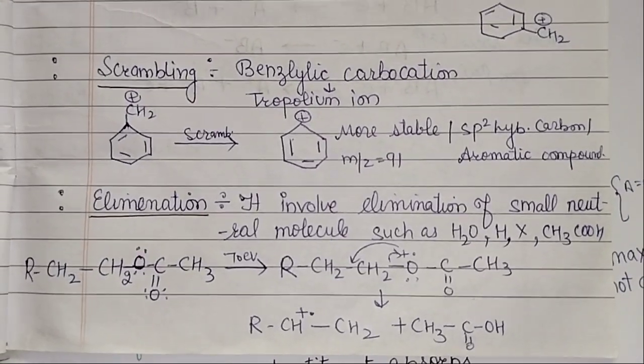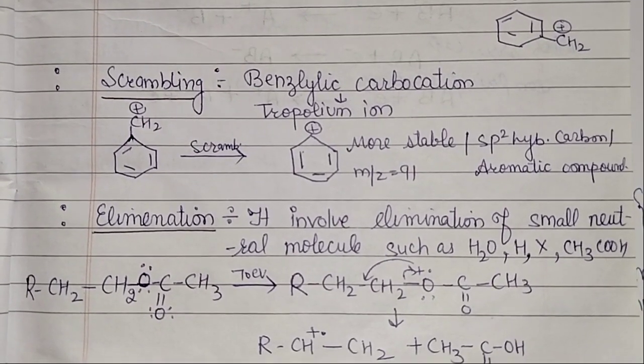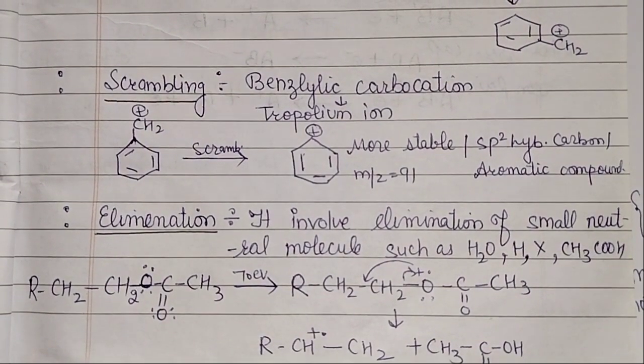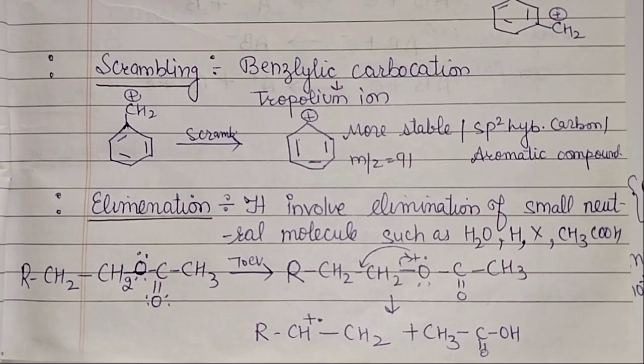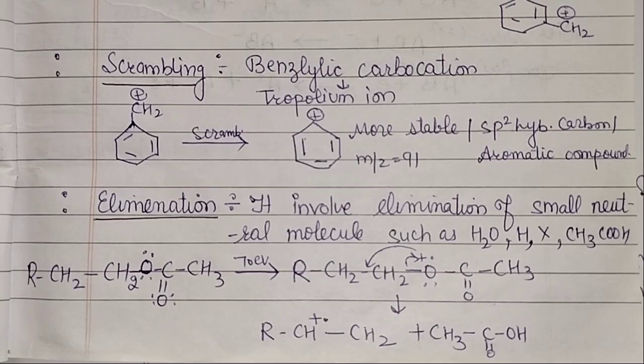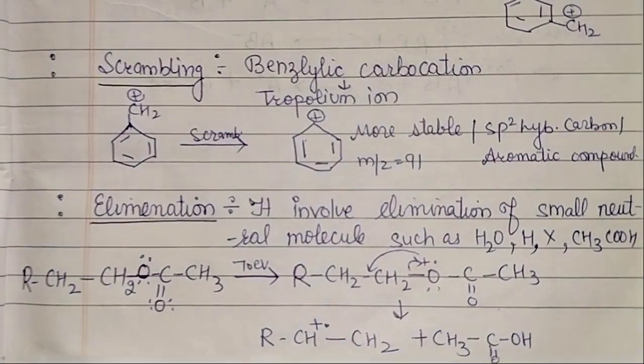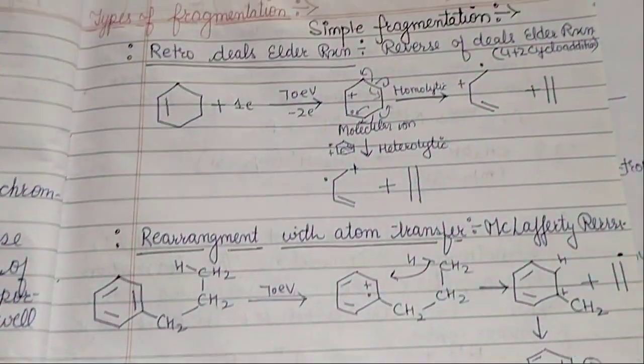Then elimination. Elimination, it will be of small neutral molecules such as H2O, HX. Okay, so we will eliminate things, we will have small neutral molecules. So these four types of fragmentation will come in mass spectrometry.